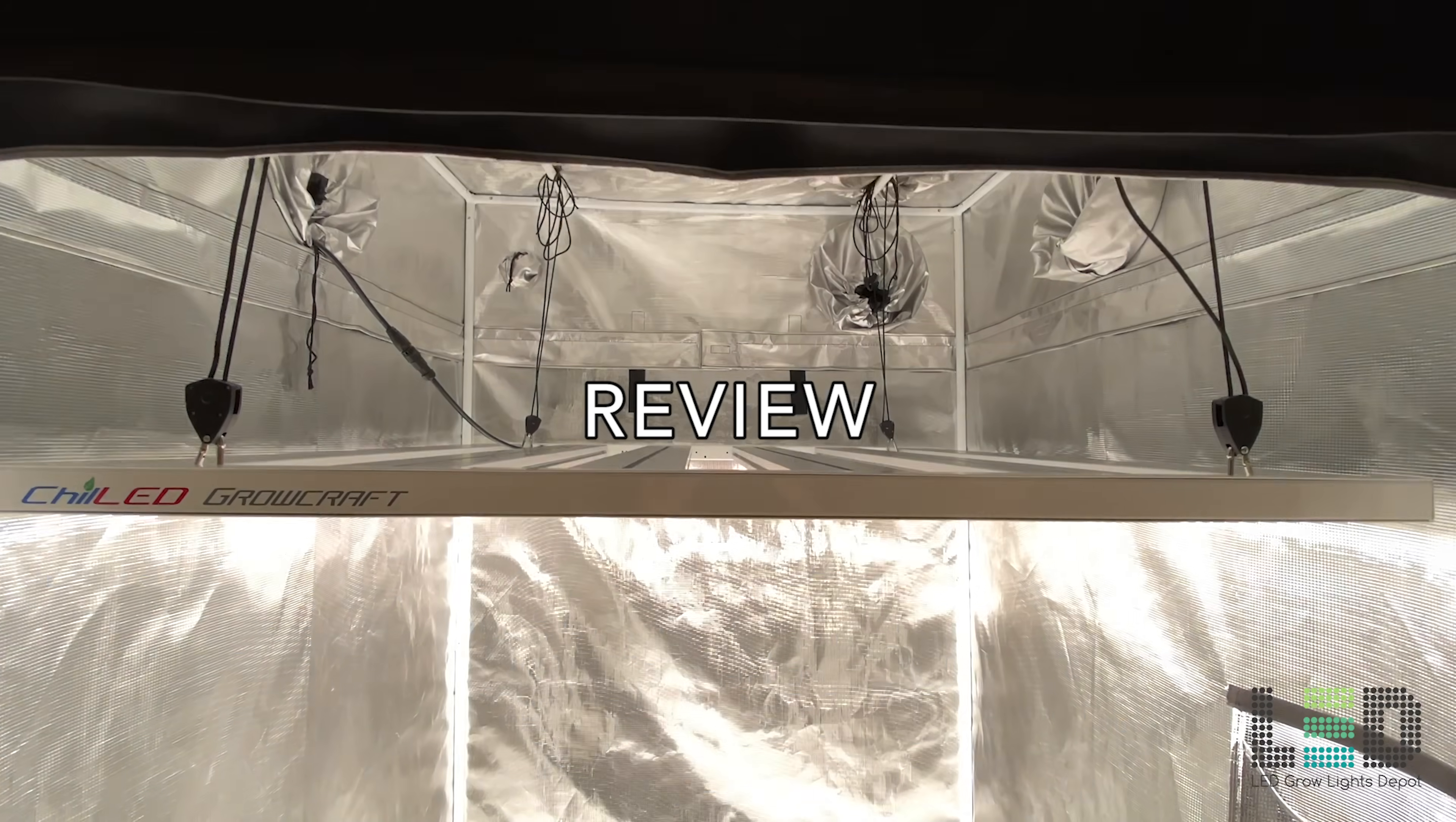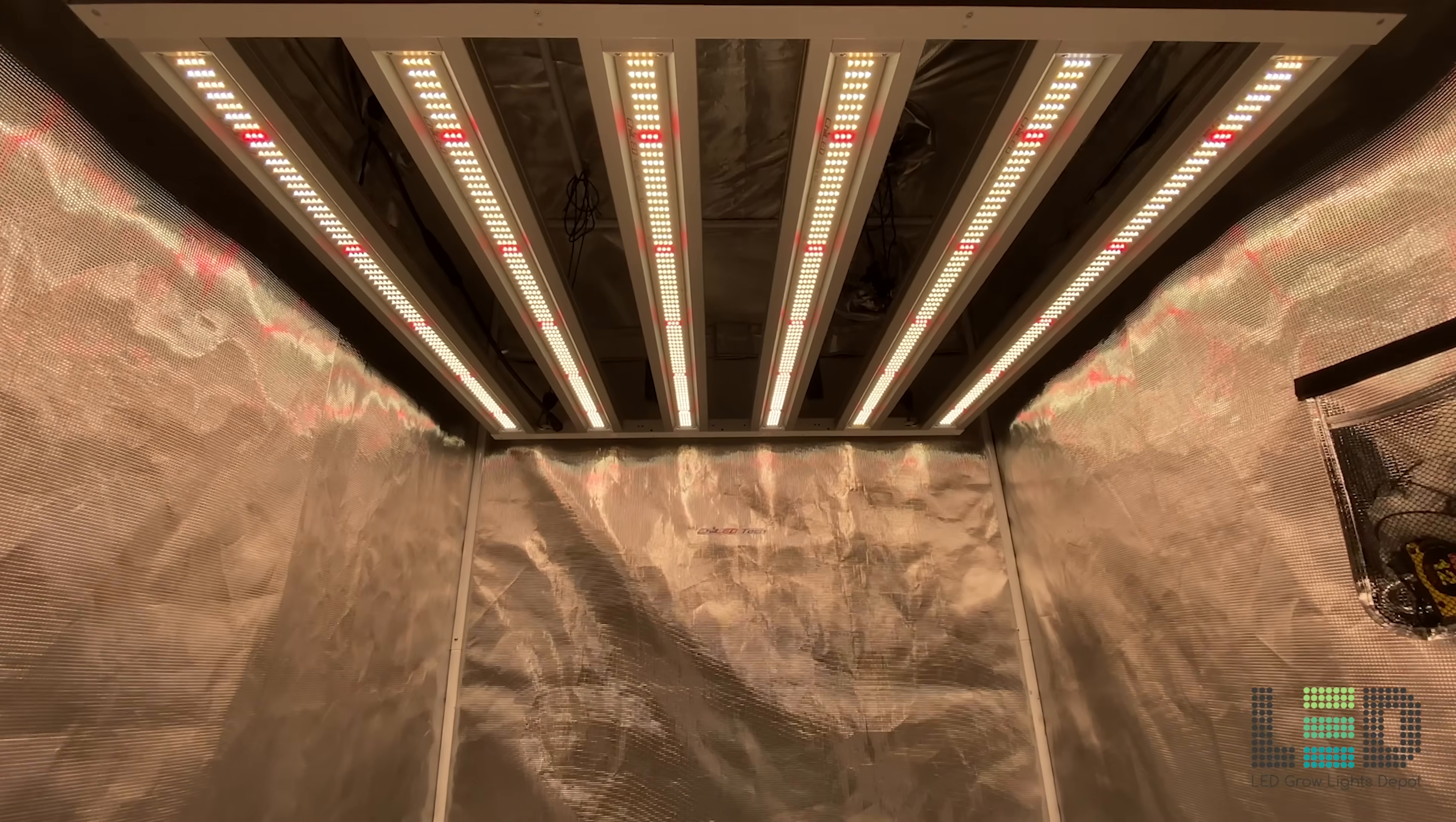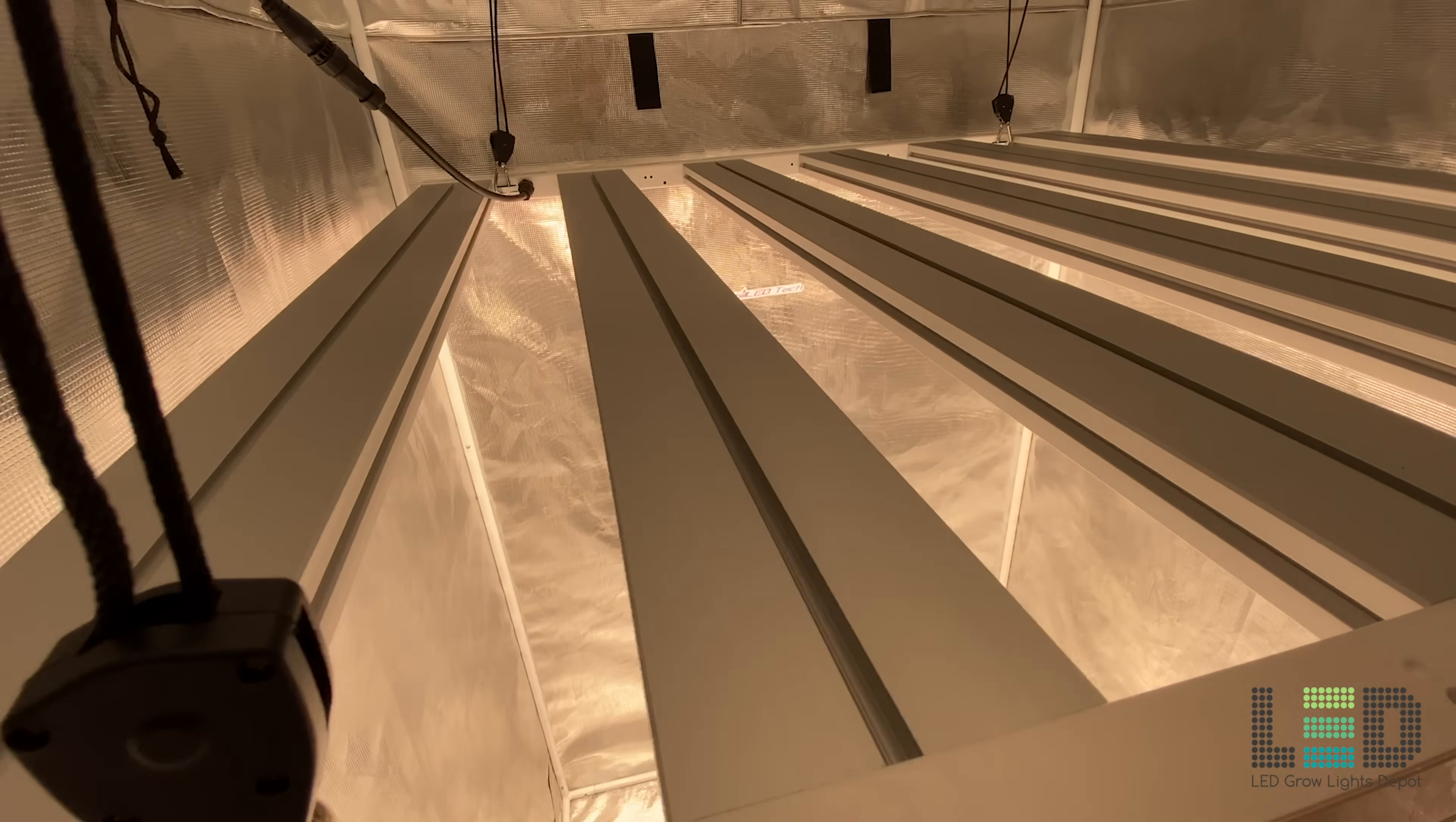The Growcraft X6 is a bar style LED grow light that can be used for vertical or horizontal gardening. The fixture features 6, 1.375 inch tall passively cooled LED bars with a rugged oversized T-slot heat sink design to optimize heat dissipation.